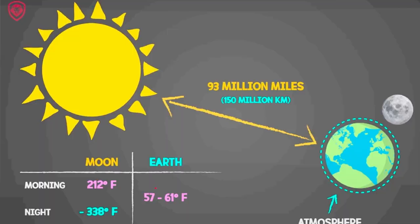Let's start with the basic concept of climate change. Here we have the Earth and Moon. The distance between the Earth and Sun is 150 million kilometers. But the daytime temperature on the Moon is around 212°F and at night it's minus 338°F. On Earth, the temperature range is not that extreme. The reason is that there is an atmosphere on the Earth but not on the Moon — the atmosphere creates a specific temperature around the Earth. Greenhouse gases absorb solar and outgoing infrared radiation to protect and maintain Earth's temperature.